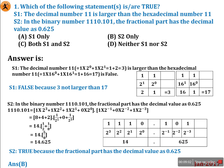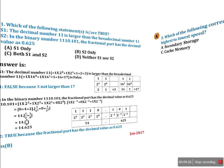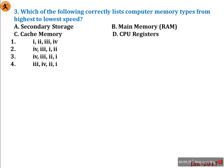In every exam — NET, SET, or GATE — one or two questions are based on number system. I hope you understood this. Now look at the next question: Which of the following correctly lists computer memory types from highest to lowest speed? Don't confuse — it is based on speed, not size.